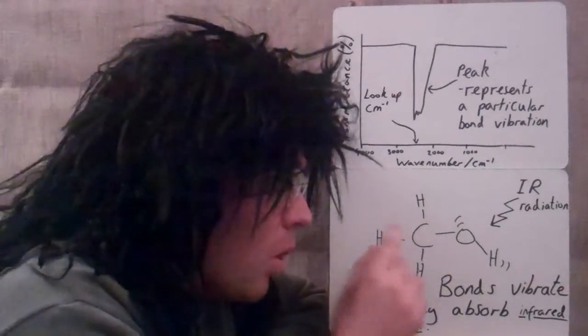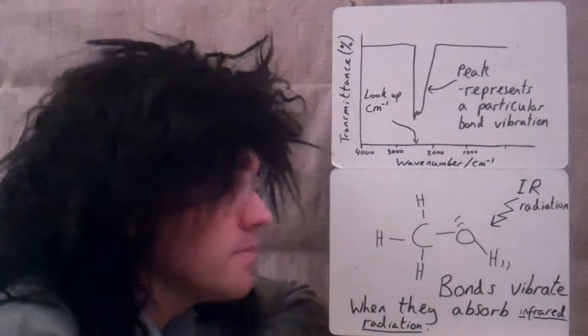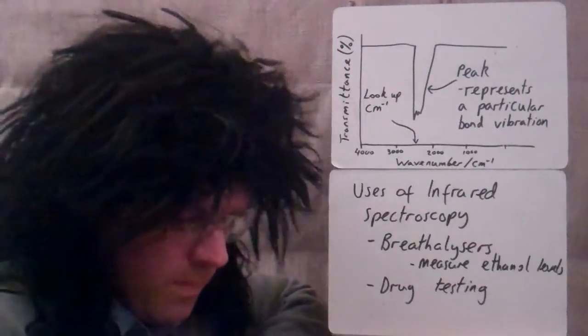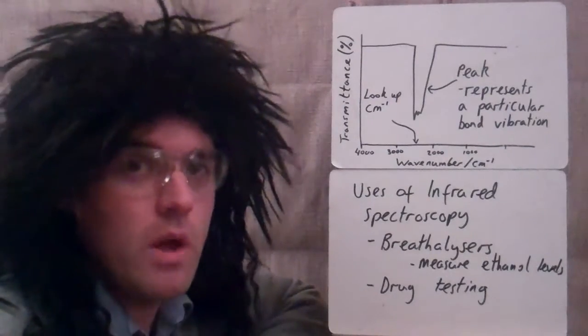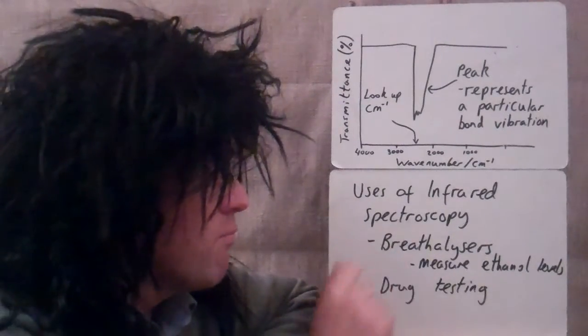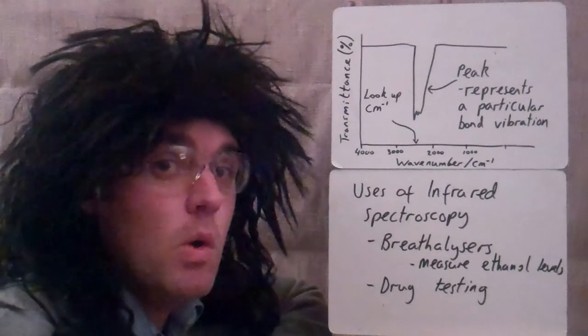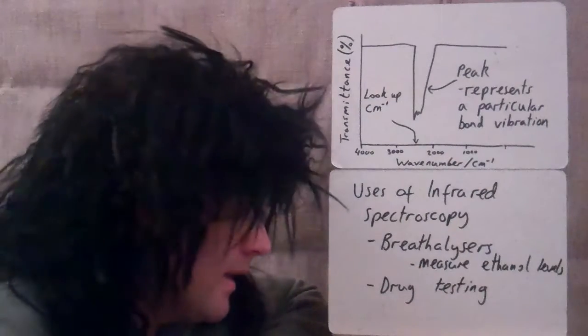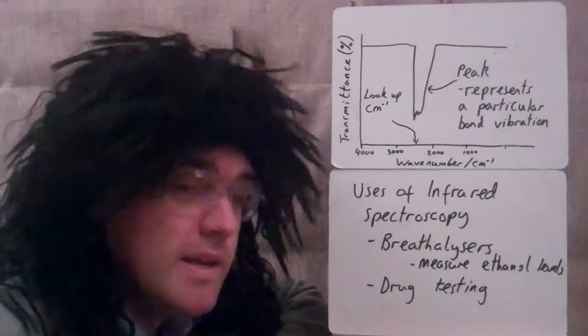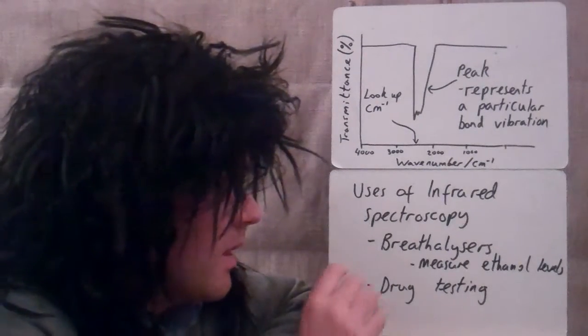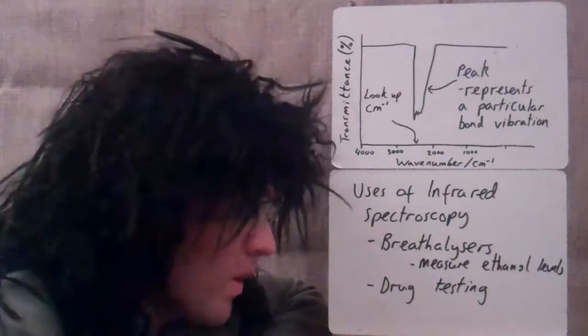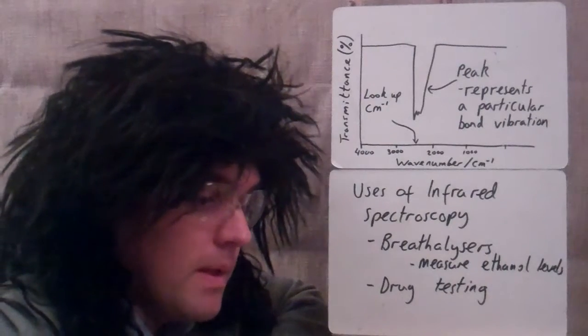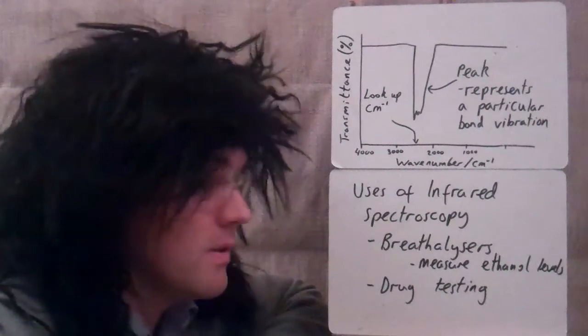What do we use infrared for? On your syllabus, one thing you need to know is that it's used in breathalysers to measure the amount of ethanol in someone's breath. It can be used to analyze other drugs as well. You could take a sample of urine from Wayne Rooney and see what he's been taking this week. It's used by organic chemists all the time so they can work out what compounds they've made or what impurities are in different samples.